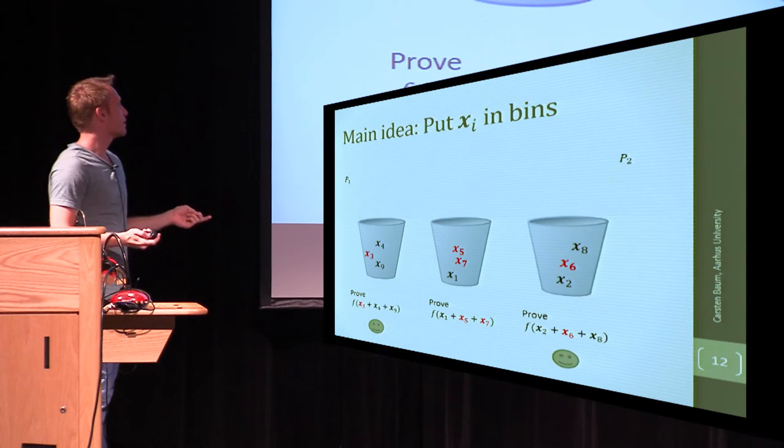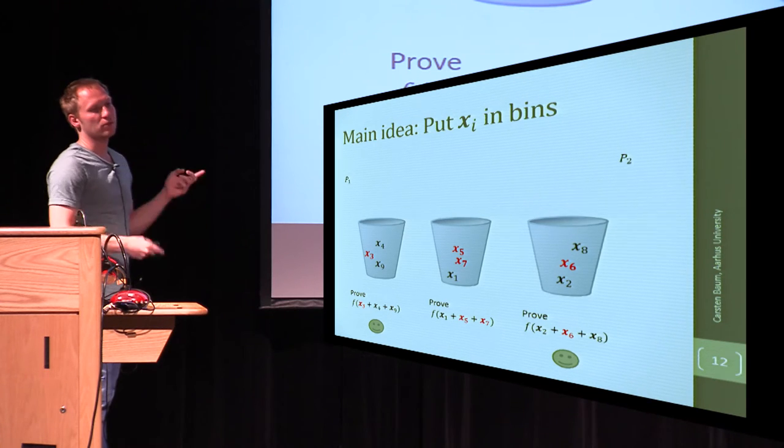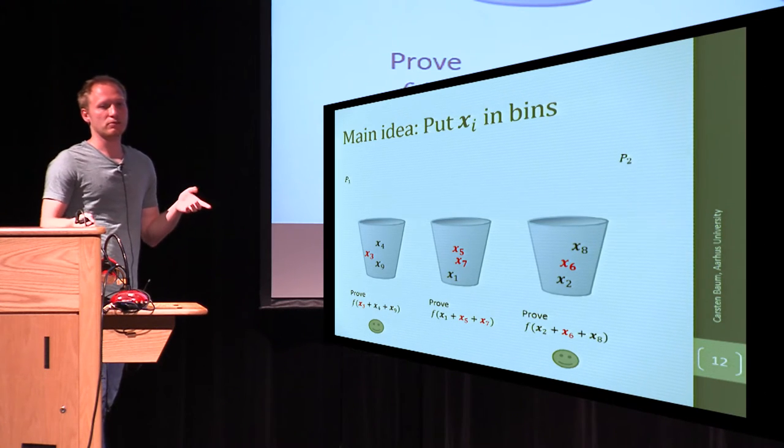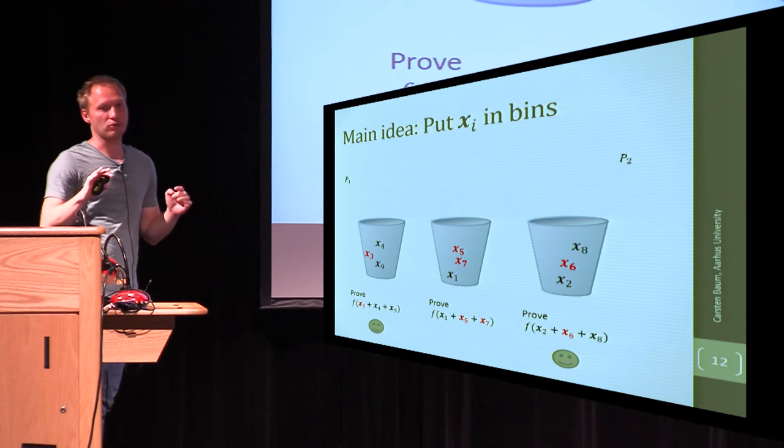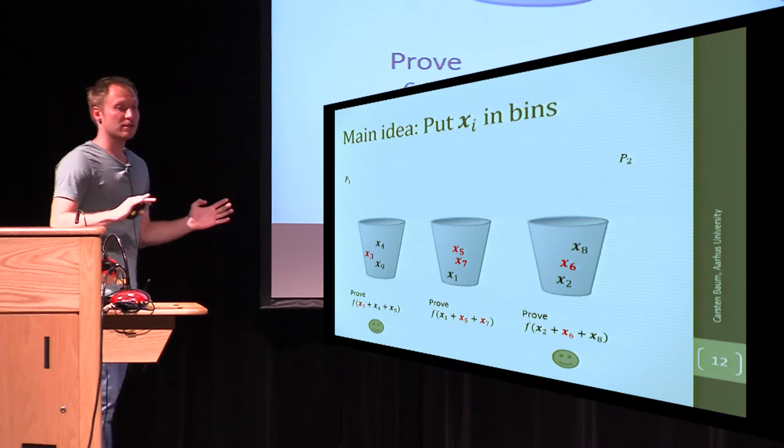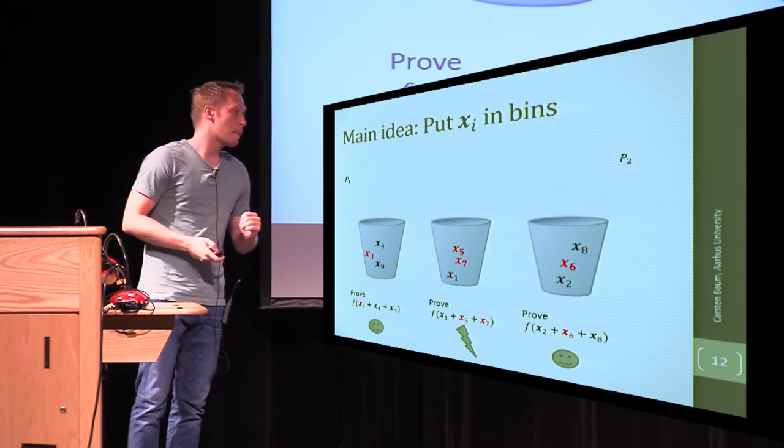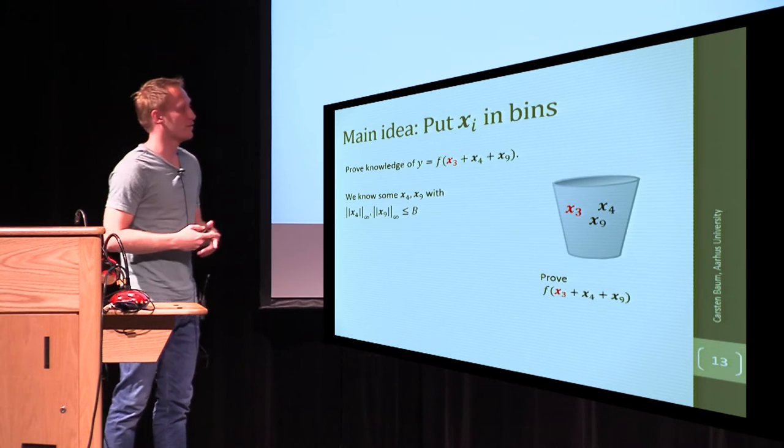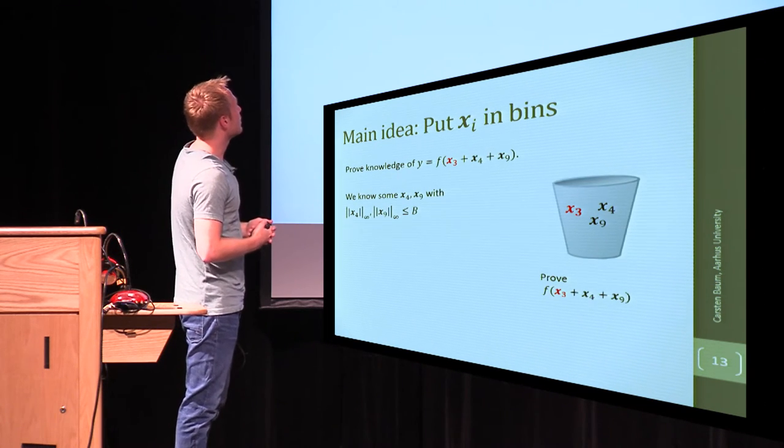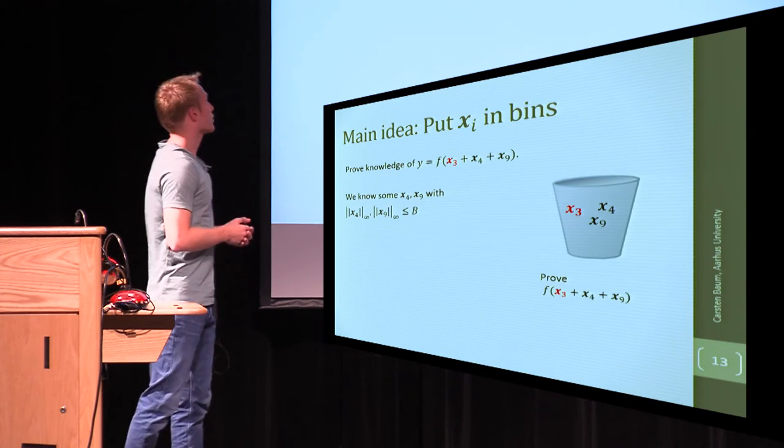Then the verifier is going to be happy if, let's say these red ones are the ones we weren't able to explain yet. Then, if there's only one of these unexplained or bad pre-images in the bucket, then we're happy. And if there's zero or two or three, then we're not that happy. The reason for the happiness of the verifier can be found in the linearity of, or in the homomorphic property of the one-way function.